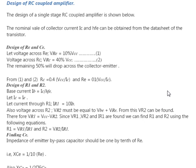For the design of a single stage RC coupled amplifier, the nominal values for collector current I_C and h_FE can be obtained from the data sheet of the transistor. For the design of R_E and C_E, let the voltage V_RE equal 10% of V_CC. The remaining 50% will drop across the collector-emitter. In this similar way, you can find out all the necessary component values.